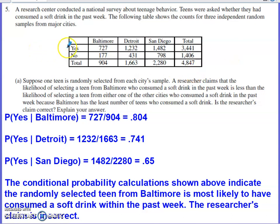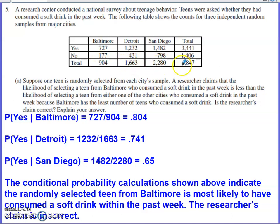The situation presented here says that a research center conducts a survey about teenage behavior. Teens were asked whether they had consumed a soft drink within the past week. The following table shows the counts for three independent random samples from major cities. We've got three cities across the top, and responses of yes or no down the left column. The values in the middle are joint frequencies, and the outside margins are called marginal frequencies — the totals for the columns and rows.